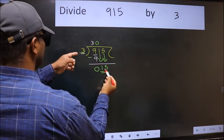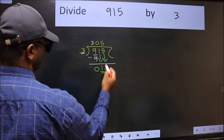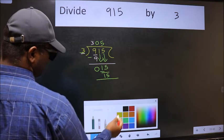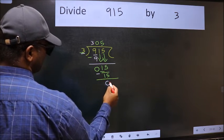Now, 15. When do we get 15 in the 3 table? 3 fives are 15. Now we should subtract. We get 0.